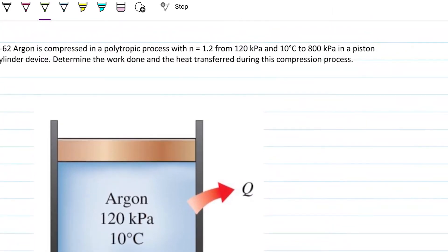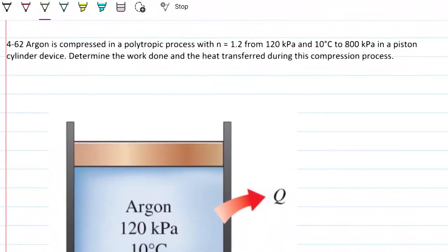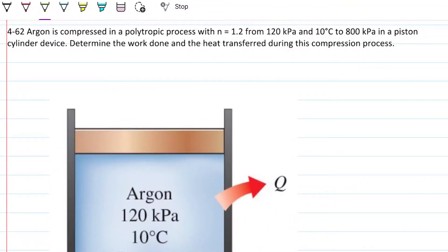The problem statement reads: 4.62. Argon is compressed in a polytropic process with n equals 1.2 from 120 kilopascals and 10 degrees Celsius to 800 kilopascals in a piston cylinder device. Determine the work done and the heat transferred during this compression process.